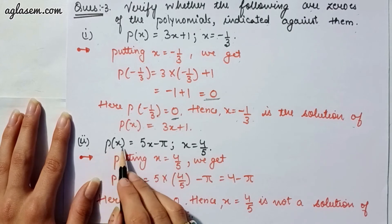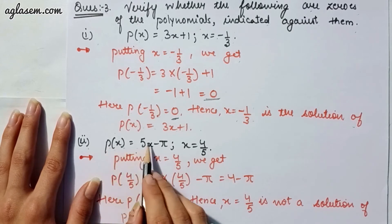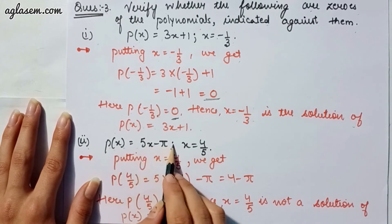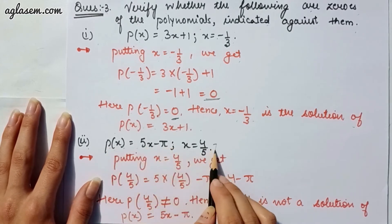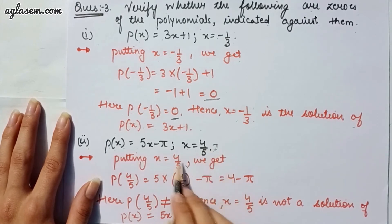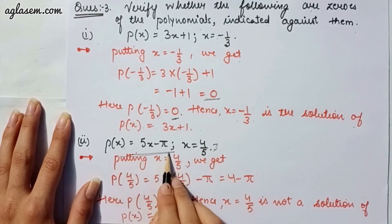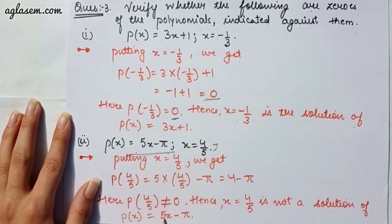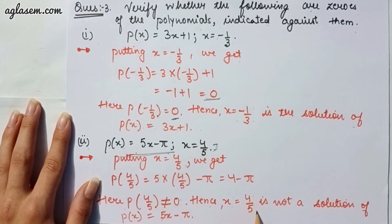Moving to the second part: p(x) = 5x - π, where x = 4/5. Putting x = 4/5 into the expression, we get p(4/5) ≠ 0, so x = 4/5 is not a zero of p(x) = 5x - π.